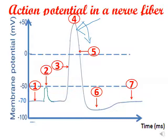Phase five is repolarization, where negativity is restored back. Phase six represents hyperpolarization — 'hyper' means high, so hyperpolarization is an increase in the negativity. Phase seven is the return back to the resting potential. As a revision, these are the phases of an action potential.